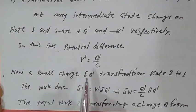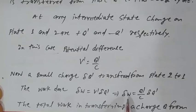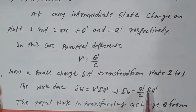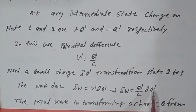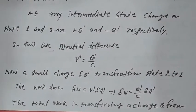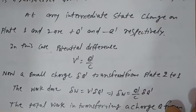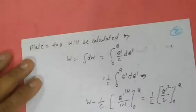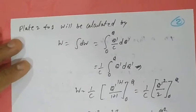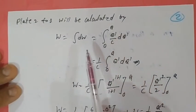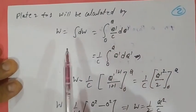Since V' equals Q'/C, we get delta W equal to (Q'/C) times delta Q'. The total work done in transferring charge from plate 2 to plate 1 is calculated by integrating delta W from 0 to Q, giving W = integral from 0 to Q of (Q'/C) dQ'.